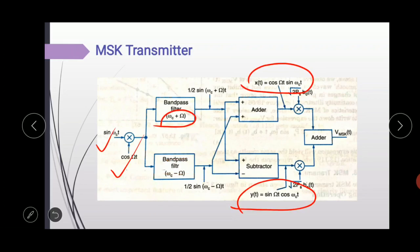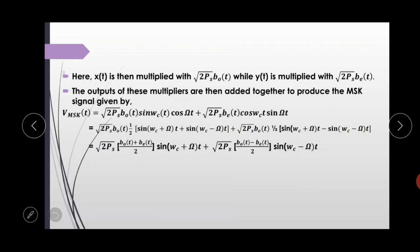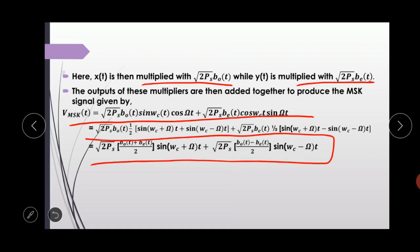x of t is then multiplied with this term, and y of t is multiplied with this term. The outputs of these multipliers are then added together to produce the MSK signal. Here it is multiplied with this one, here it is multiplied with this one. Then at the output, we add these two terms, that is the output of two multipliers. After solving this, we get our final MSK signal.